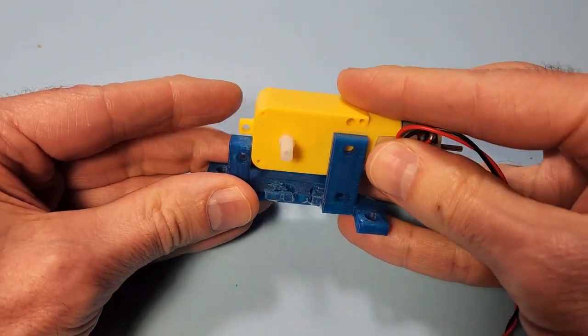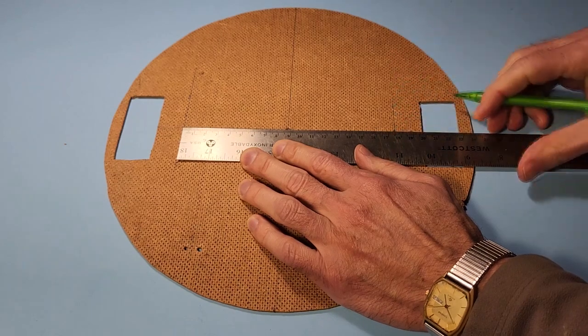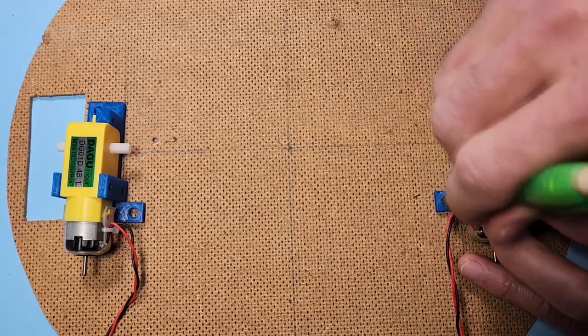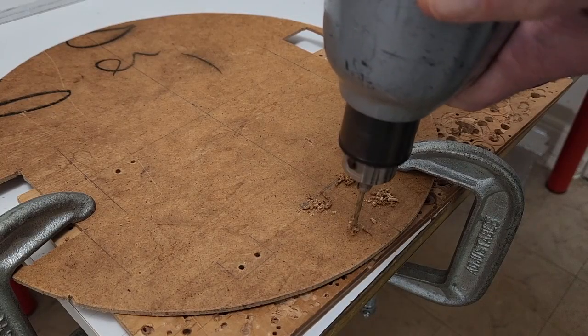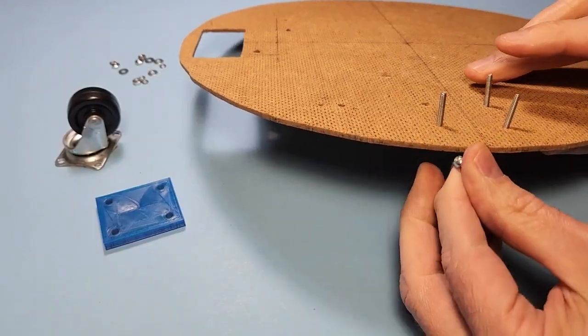To mount the motor, I design this 3D printed part that the motor slips into. On the underside of the board, I carefully measure where that part should go. And using the 3D printed part, I mark where the holes should be drilled. I then drill all those holes, first for the caster wheel, and then for the two big wheels.